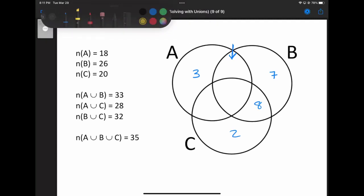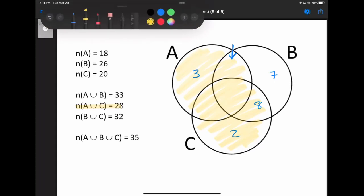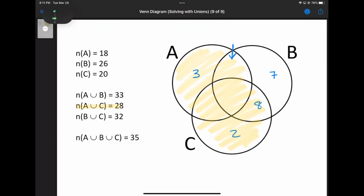Come on, color change. Everything in A and C is here. And that's 28. But we know that the stuff within C, the stuff within C is 20. So that means that these areas are 20.